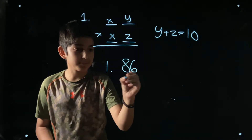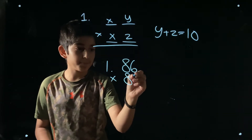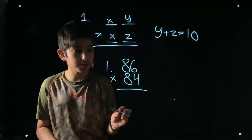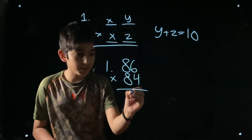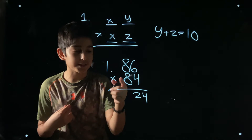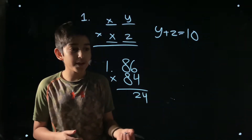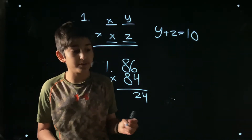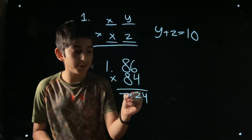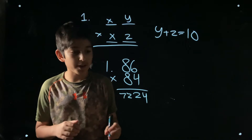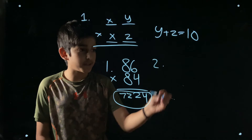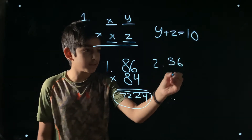First example: 86 multiplied by 84. Multiply the units digits — 6 times 4 is 24. Then take the tens digit, which is 8, and multiply it by the next following number, 9. So 8 times 9 equals 72. Write that in front of 24 and we get our answer: 7224.